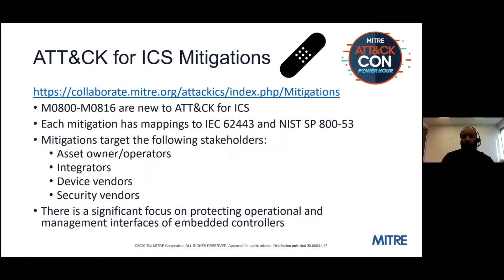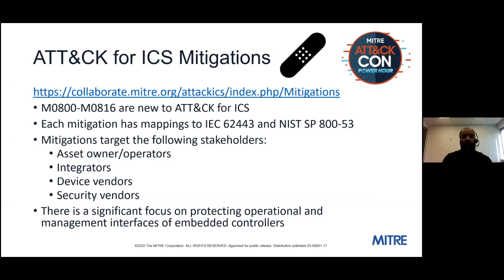In the first blog post upon release of ATT&CK for ICS, some short-term goals were outlined — particularly around the insecure-by-design nature of many components and networks in industrial control systems. We thought it prudent to think about mitigations associated with the adversary behavior and techniques. Our approach was to use ATT&CK for Enterprise, see what mitigations they had, and figure out the gaps — which resulted in 17 new mitigations focused on industrial control systems.